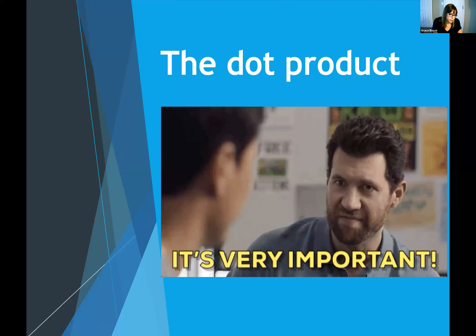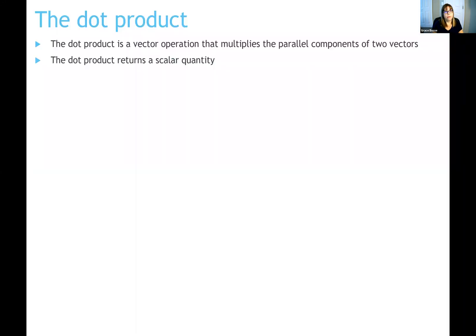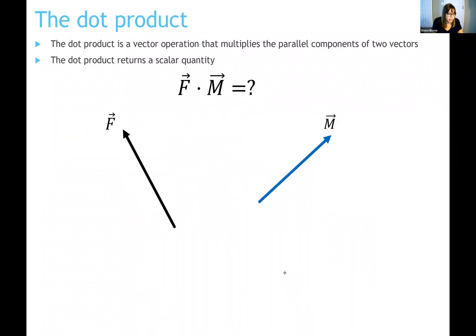The dot product is a form of vector multiplication, but it's more than just multiplication — it only multiplies the parallel components of two vectors. Another important thing to understand is that you're taking two vectors, performing the dot product between them, but your answer is actually a scalar. You should be getting numbers out after performing a dot product.